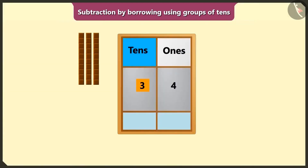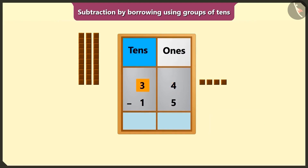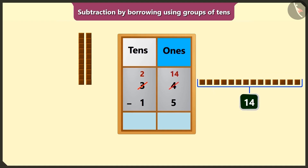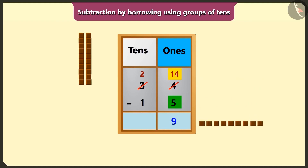34 means 3 tens and 4 ones. 15 means 1 ten and 5 ones. We cannot subtract 5 from 4 in the box of ones, so we will borrow 1 ten from 3 tens in the box of tens, leaving 2 tens. We will have 10 ones plus 4 ones — 14 ones in the box of ones. Now if we subtract 5 ones from 14 ones, we get 9 ones left.